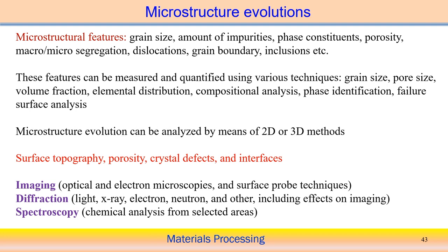For example, we do surface topography analysis, porosity analysis, look into any crystal defects, and any interfaces. The microstructure can be analyzed using 2D and 3D methods. From samples, one measuring approach is the imaging process. We can utilize the optical microscope or electron microscope — either optical microscopy, electron microscopy, or any kind of surface probe techniques. This is generally called the imaging process using these instruments.